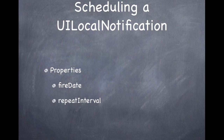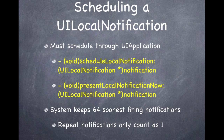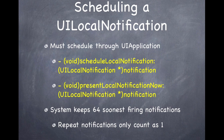Once you've created your notification and assigned a fire date, you need to queue it so the system will fire it. Two UIApplication methods are available: scheduleLocalNotification, where you pass in the notification and it fires on the specified fire date; and presentLocalNotificationNow, which immediately presents the notification regardless of fire date. Keep in mind the system can only keep the 64 soonest-firing notifications for your app. If you exceed that, only the 64 soonest are kept. Repeating notifications count as only one toward this limit of 64.